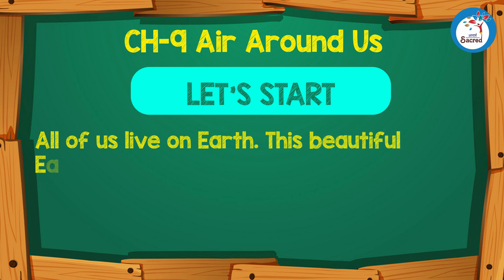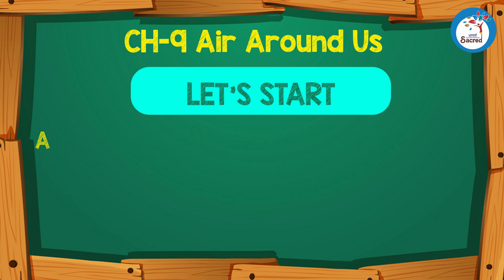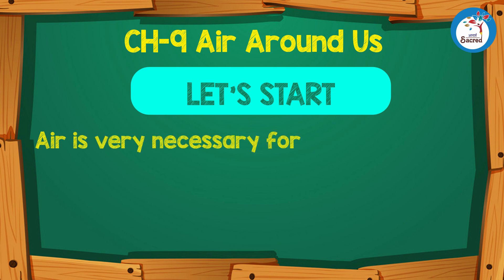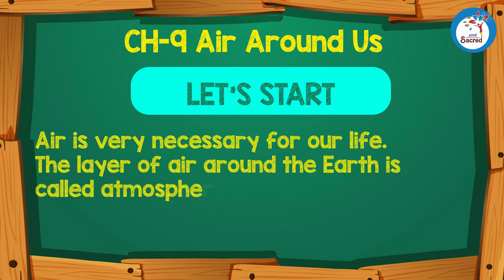Let's start. All of us live on earth. This beautiful earth is made up of air, water and land. Air is very necessary for our life. The layer of air around the earth is called atmosphere.